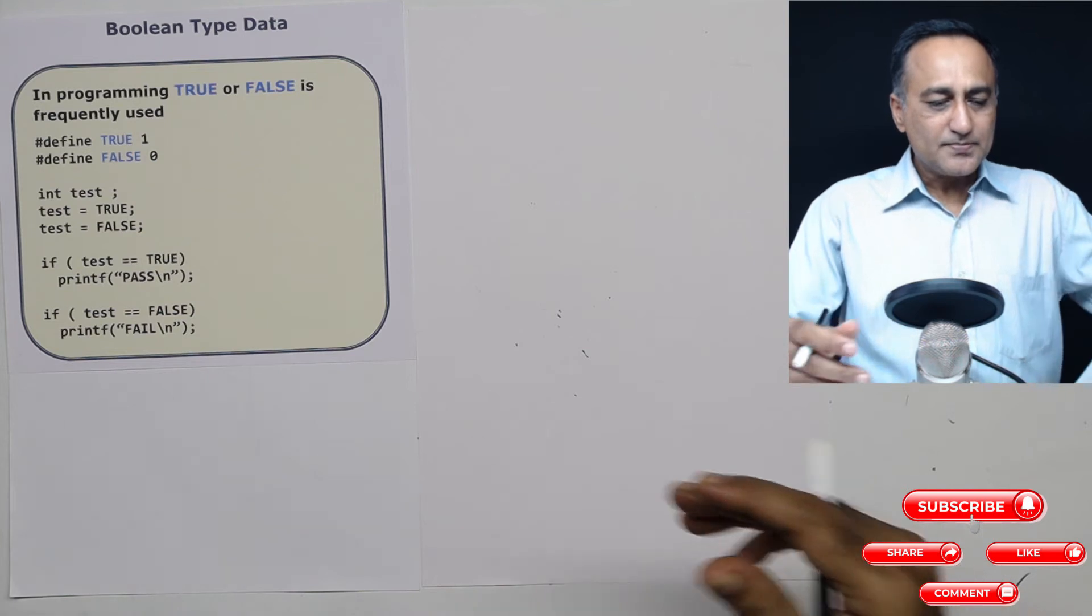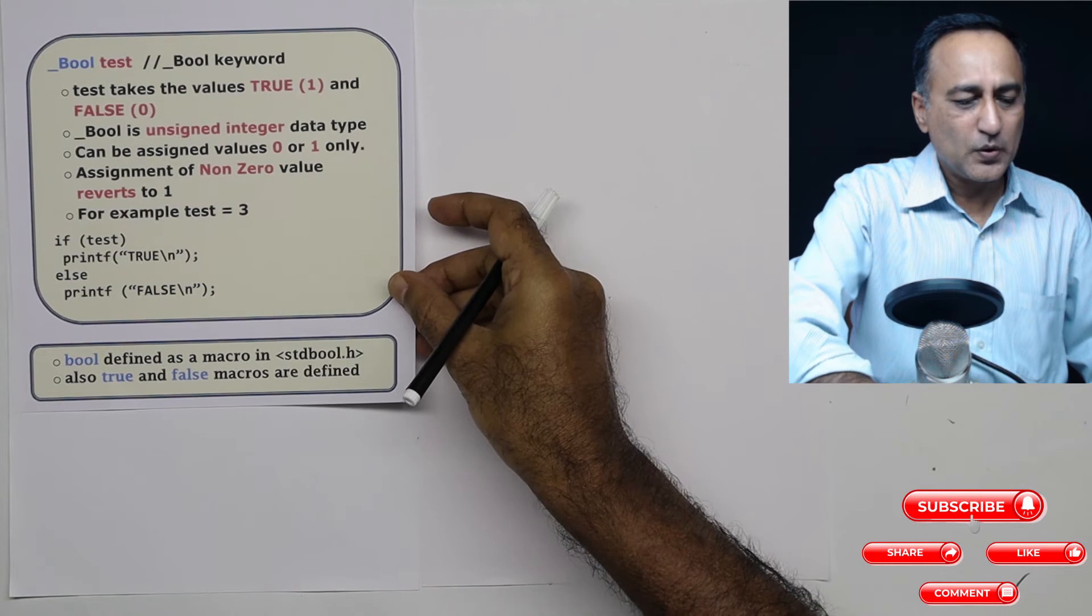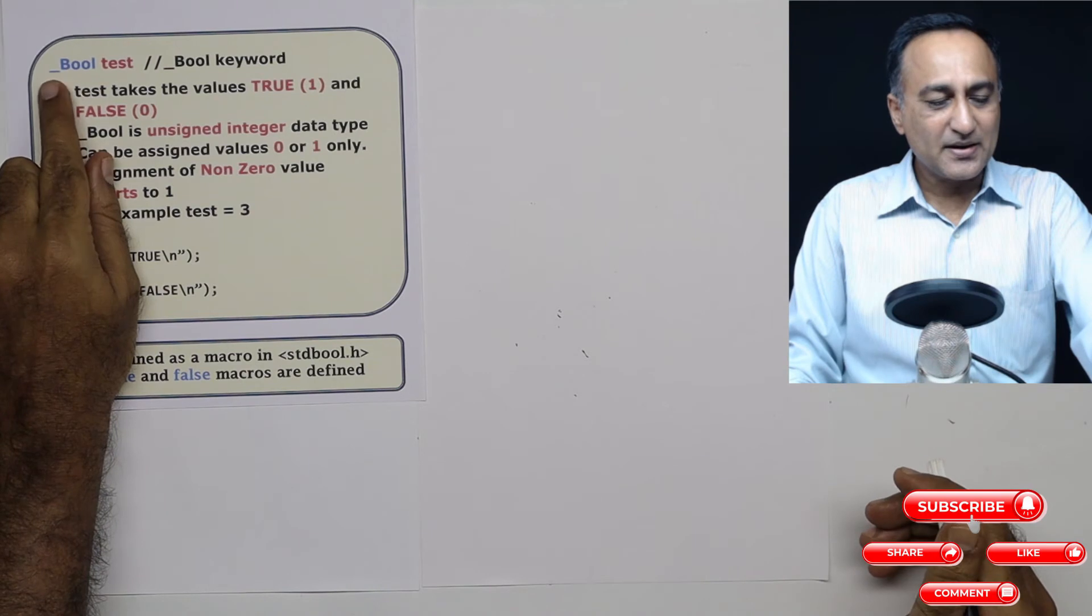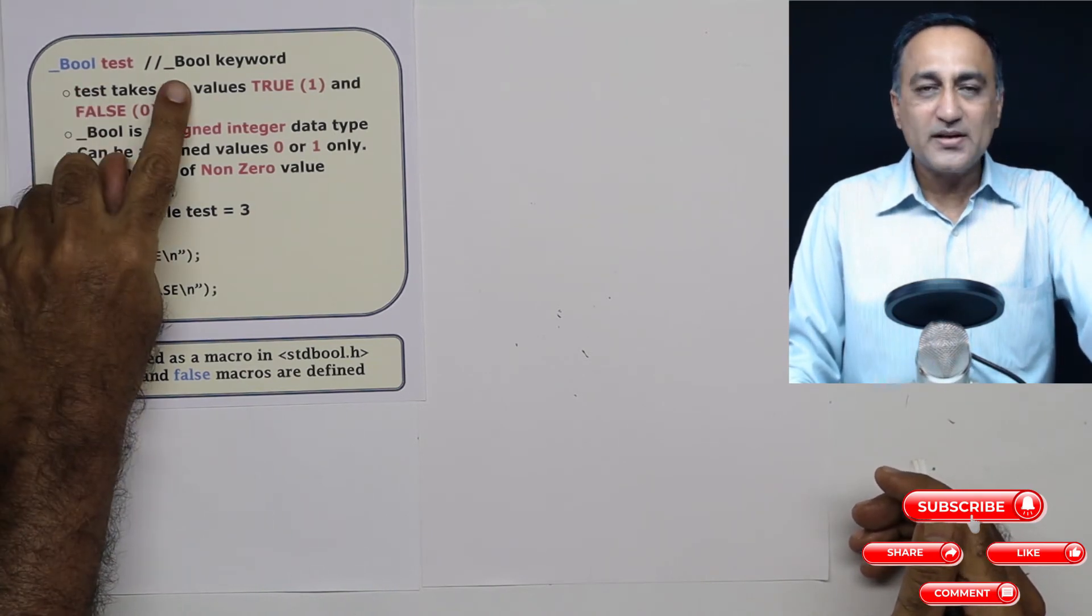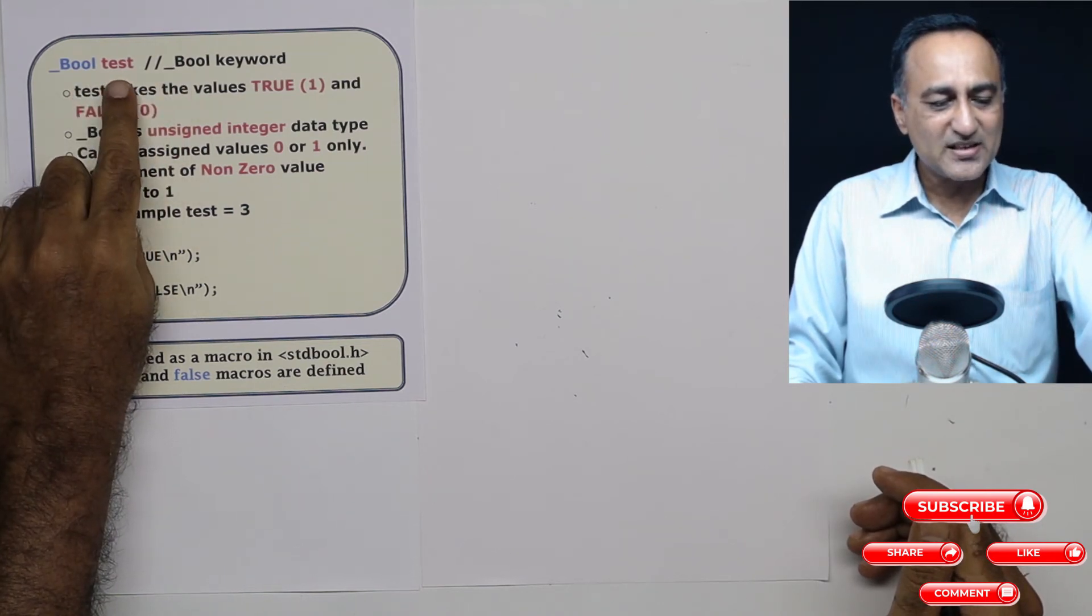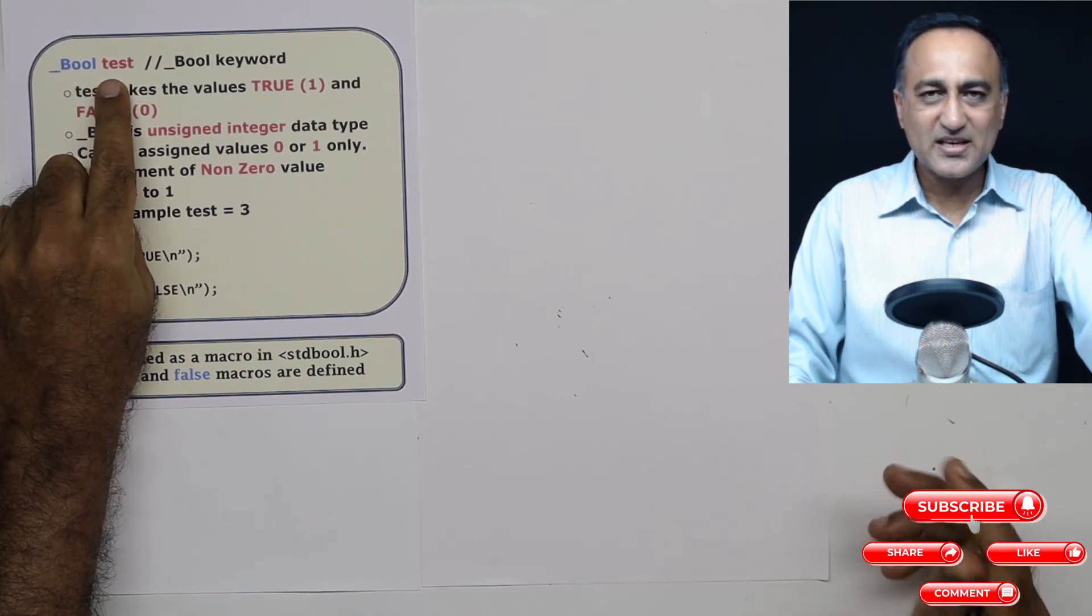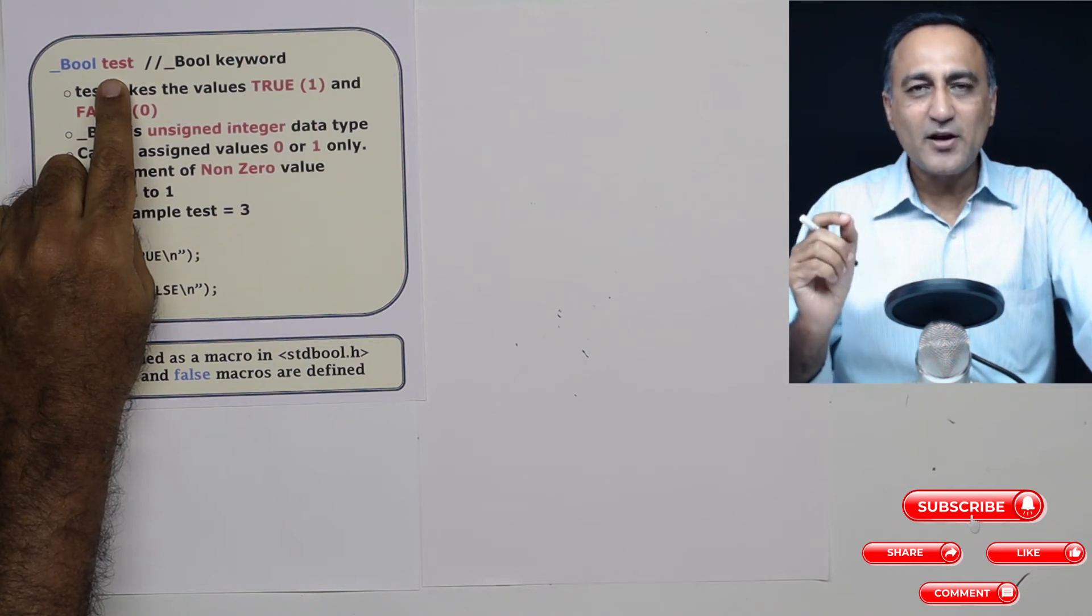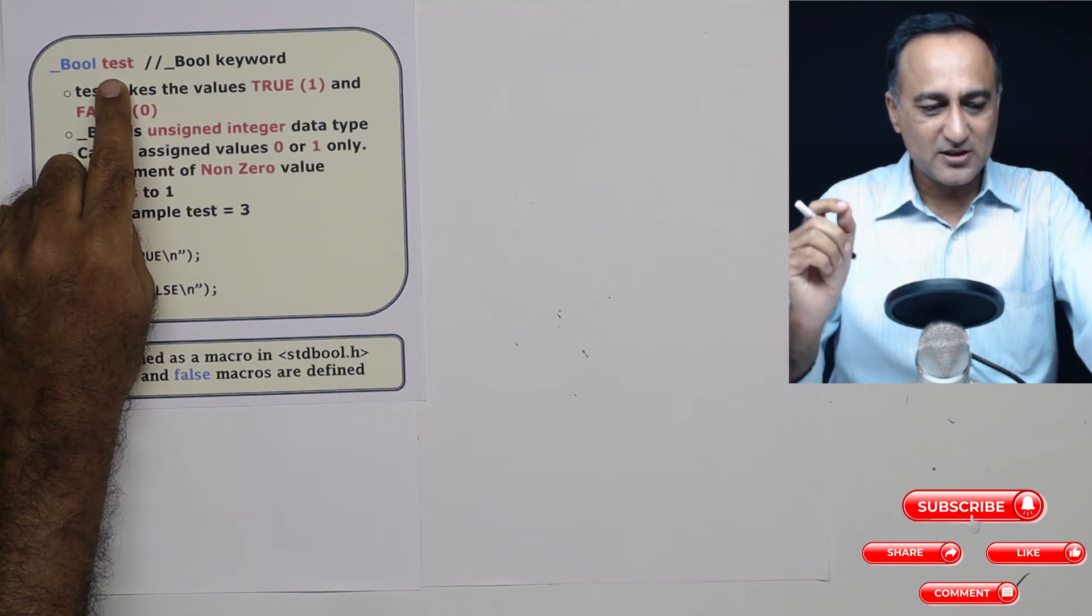Now let's take a look at how we are going to declare a bool type of a variable. So first thing you need to understand is this B is in capital and it starts with an underscore and _Bool is actually a keyword in C programming language. So here what I have done is I have declared test, which is a variable of the type bool. That means test can hold only two values, either true or false. True means if the value of test is non-zero, it is true. If the value of test is zero, that means it is false.